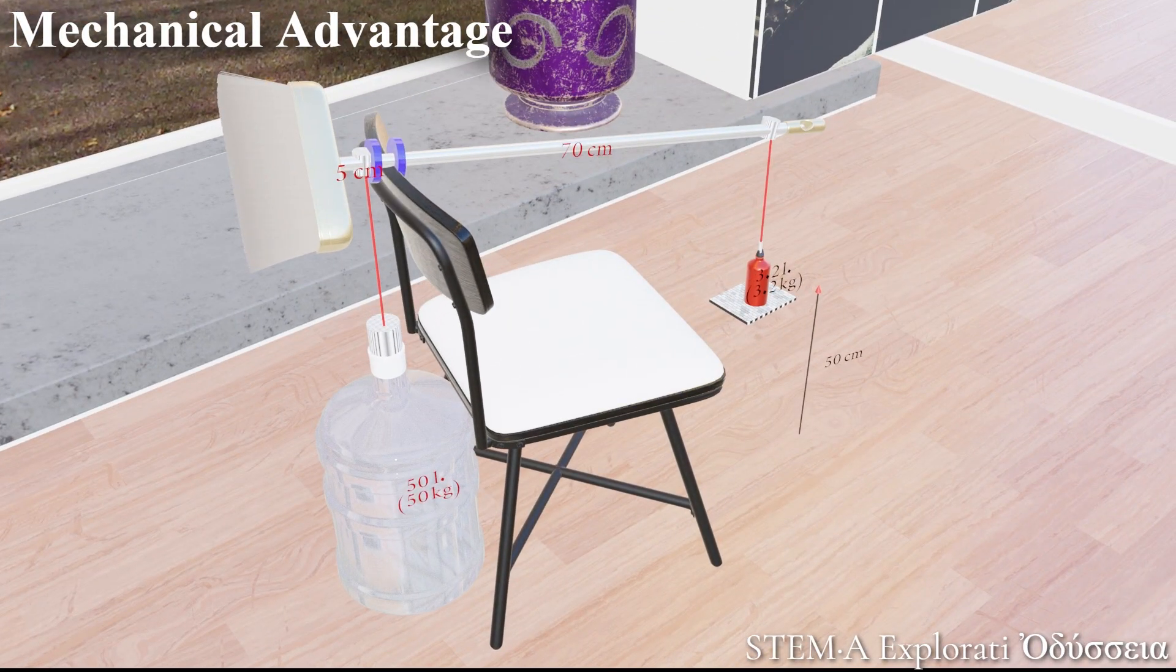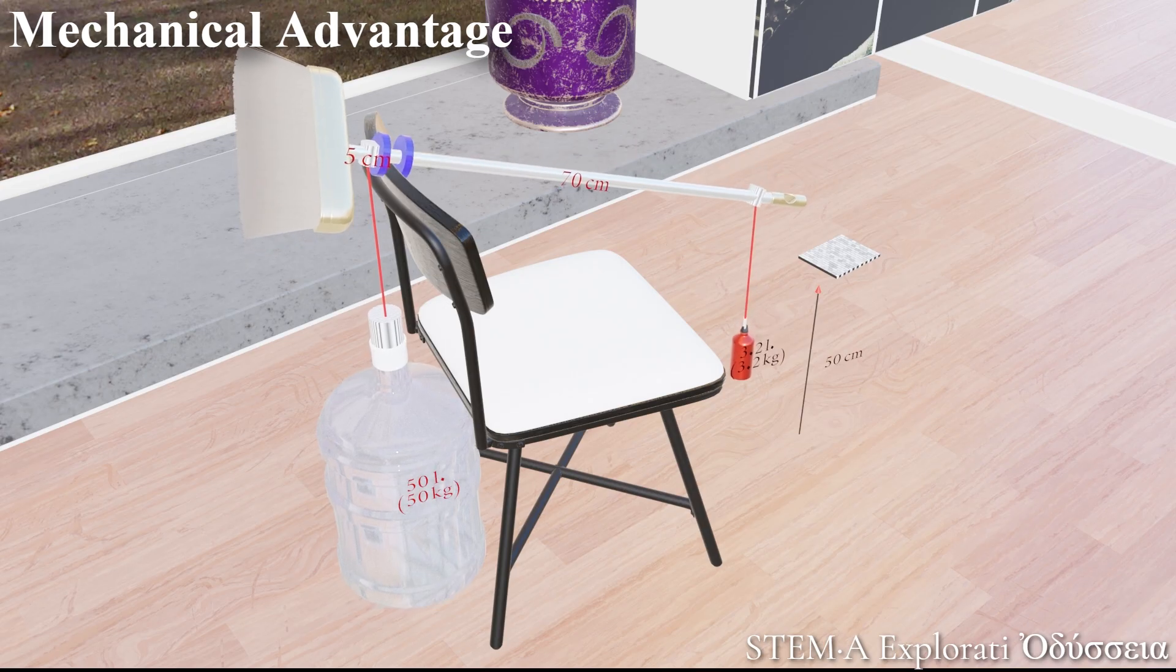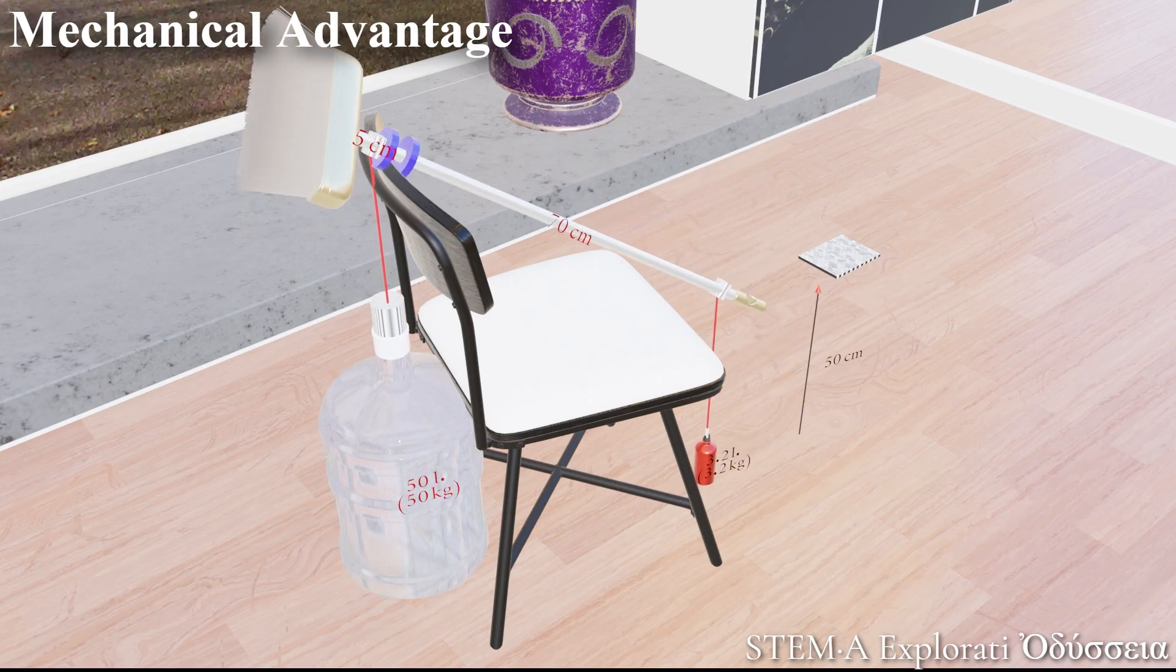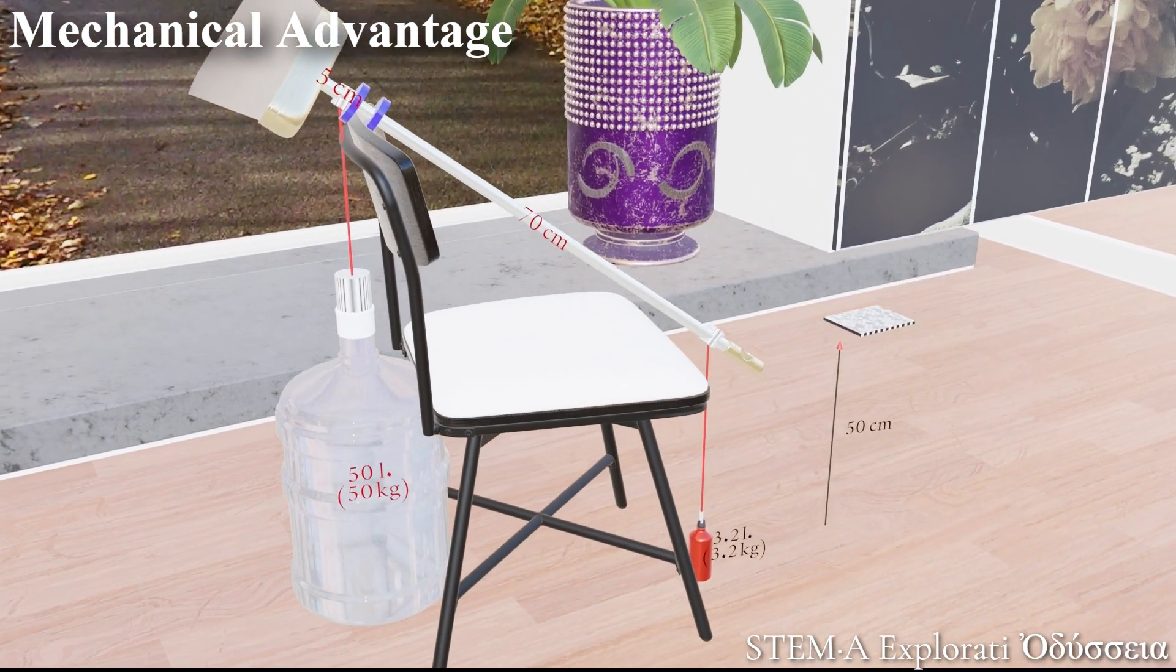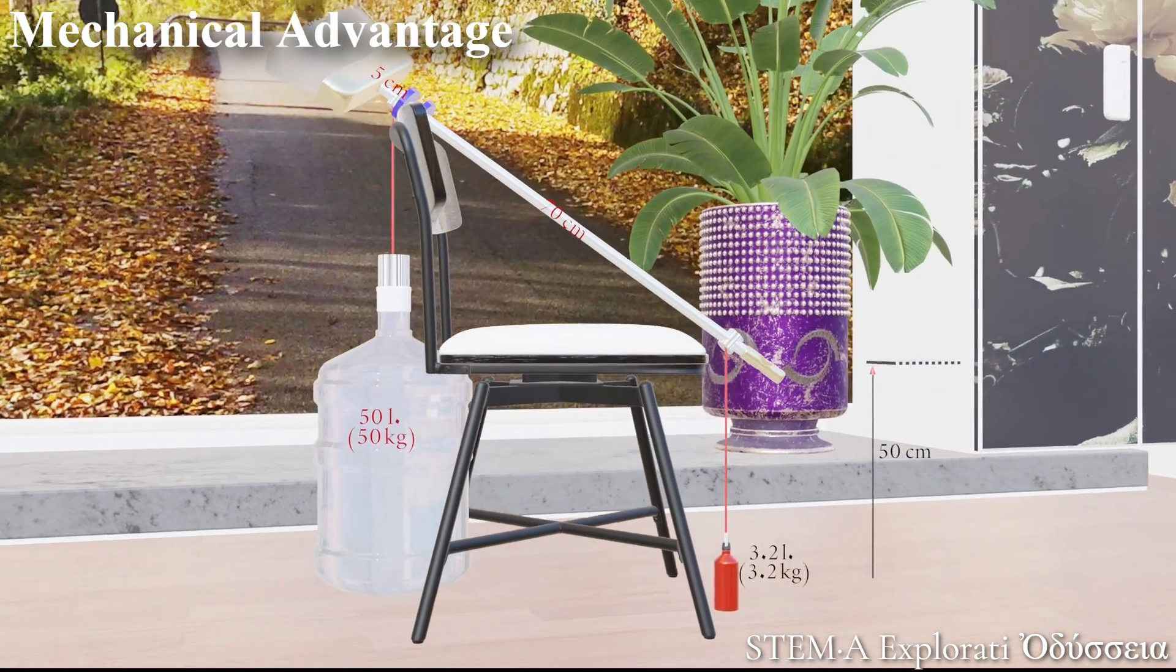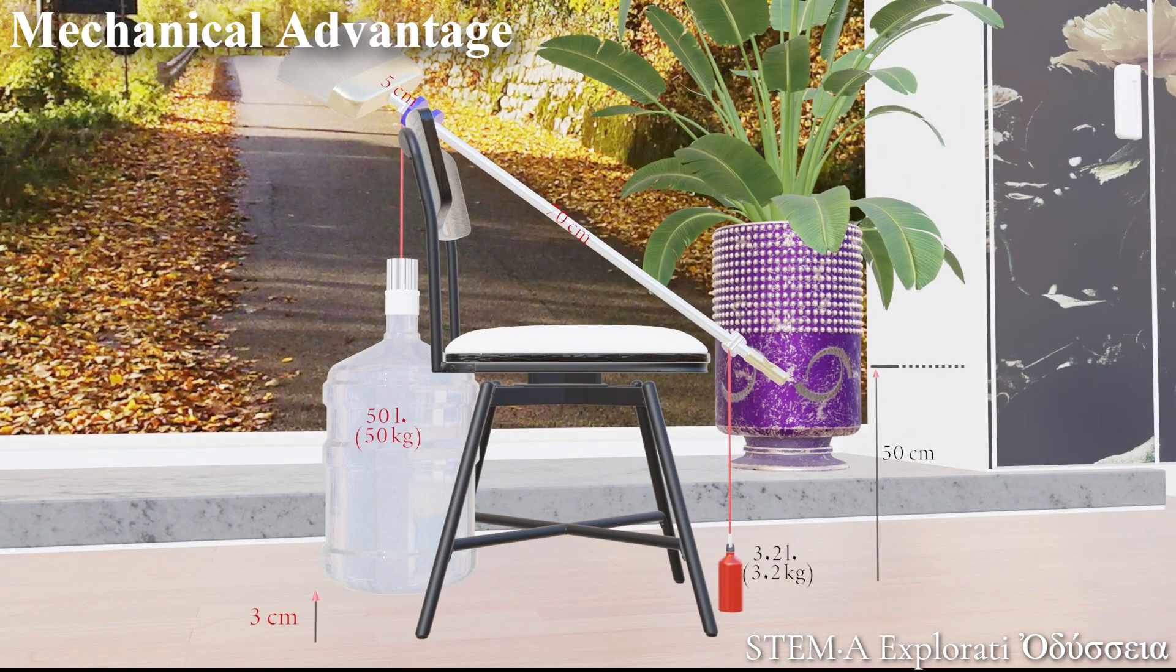Next, what if we raise the stakes? Forget the two liter bottle. This time we're going for 50 liters. And yes, I had to bring out a special custom-made metal broomstick for this stunt. Let's see if the principle still holds.